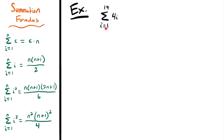Next, we have the summation from i equals 1 to 19 of 4i. The first thing you want to do when you have a summation like this, where you have an i being multiplied by some constant, is to pull that constant out. That's going to make it a lot easier to evaluate. So this will be equal to 4 times the sum from i equals 1 to 19 of i.